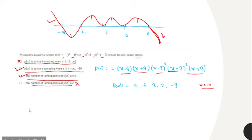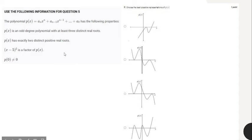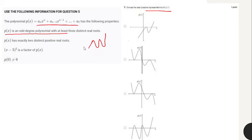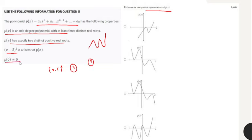Moving to the fifth question, we have to find the possible graph representation of p of x. The polynomial is of odd degree, so it approaches negative infinity and positive infinity at the ends. p of x has exactly two distinct positive real roots, and x minus 5 is a factor squared, meaning 5 is a repeated root (a turning point). Also p of 0 is not equal to 0.